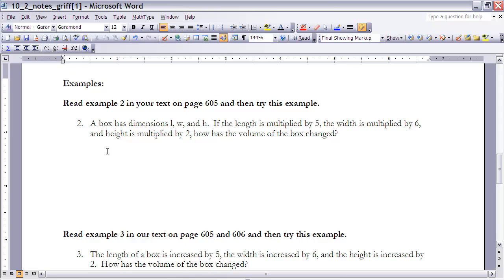So let's take a look at this second example here. It says a box has dimensions of length, width, and height. If the length is multiplied by 5, the width is multiplied by 6, and the height is multiplied by 2, how has the volume of the box changed? Well, we know that the original volume of that box would be length times width times height. Now if the new length is 5 times the original length, and the new width is 6 times the original width, and the new height is 2 times the original height.